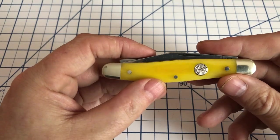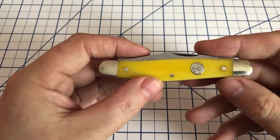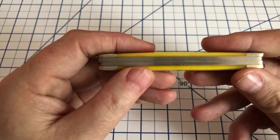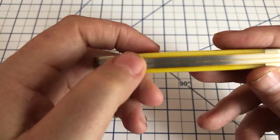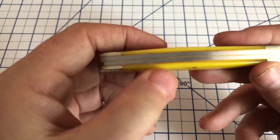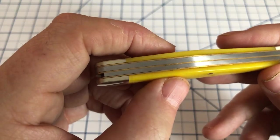Again, yellow smooth bone on the handles, the Solingen shield, nickel silver bolsters. This has been in storage for a while, so you can see there is some tarnishing on the brass liners.